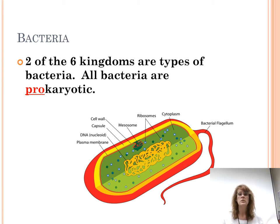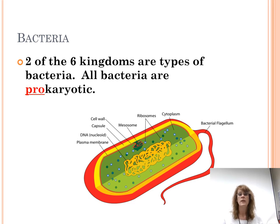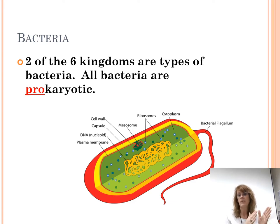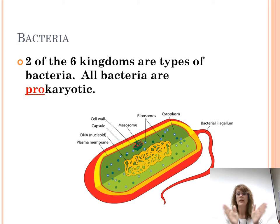This is why bacteria can mutate so quickly — their DNA is more susceptible to different changes. When I was growing up there were only five kingdoms and we had Kingdom Monera. Sometimes you'll still hear bacteria called Monerans. But now we have the technology to discover that there was one thing some bacteria had that others didn't, and that was enough to divide Kingdom Monera into two different kingdoms.